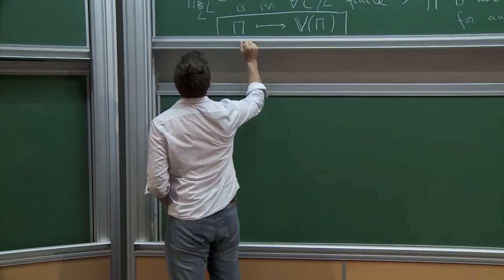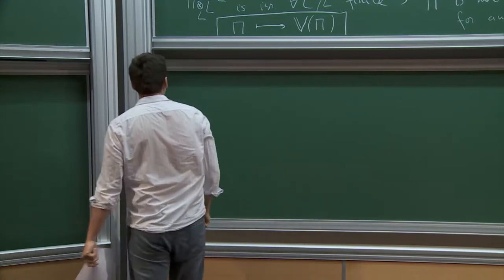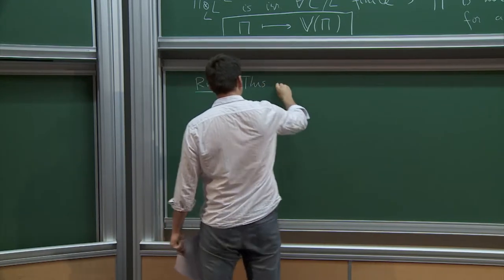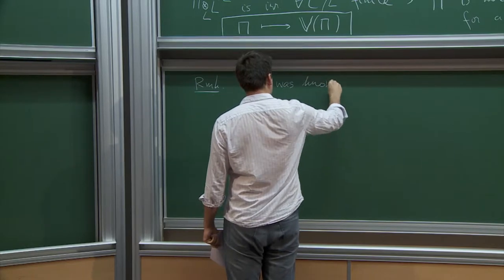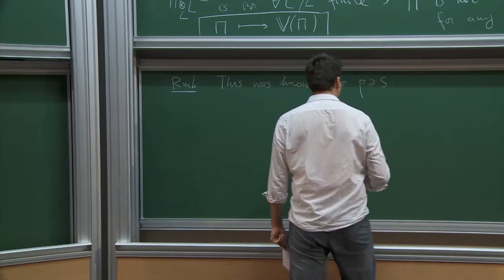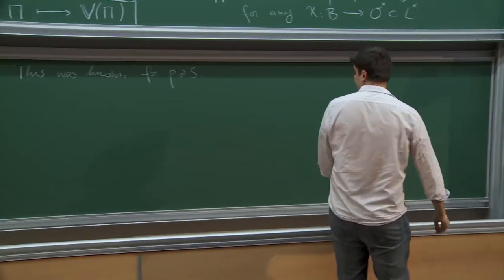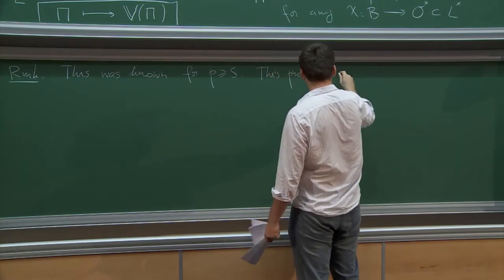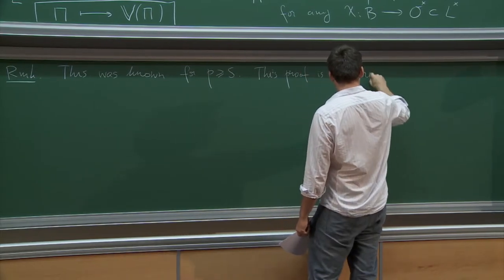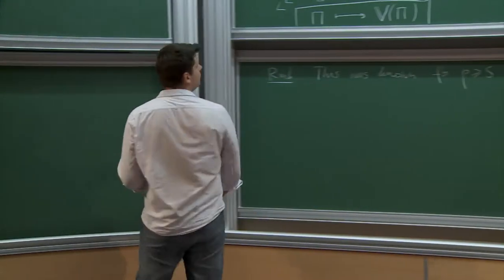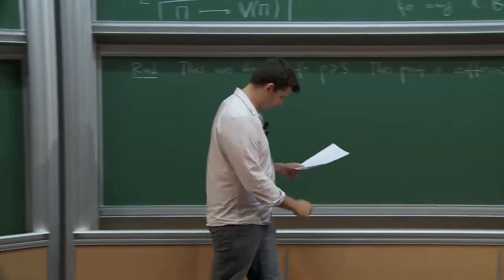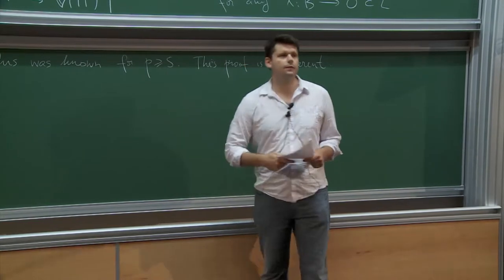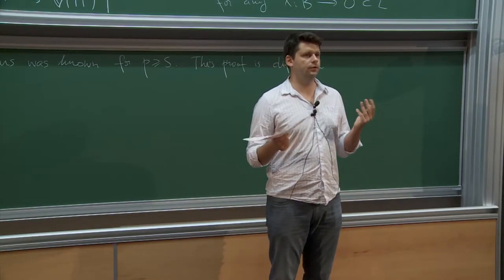What I should remark is that this was known for p ≥ 5, but now the proof is different. For p ≥ 5 it is kind of a characteristic p proof, and this new proof is a characteristic zero proof.